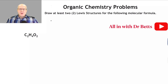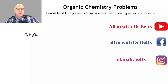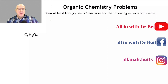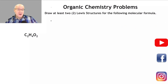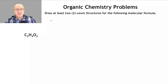This one gives us one formula, but it wants two Lewis structures. There's something in chemistry called isomerism, and this is asking us essentially to draw isomers. We have the same formula, but we want two different structures that satisfy that formula. That's what it's asking us to do.